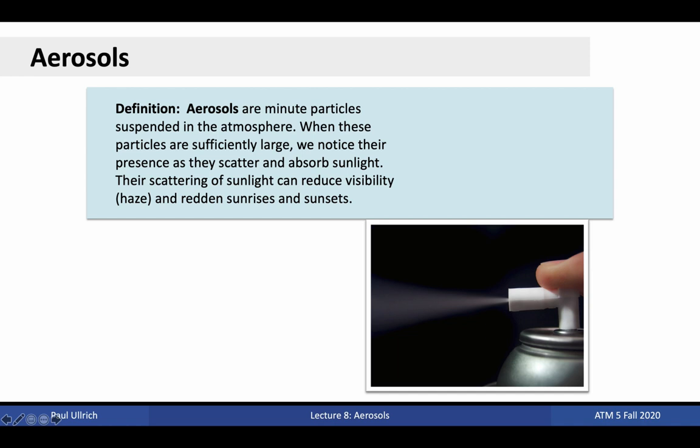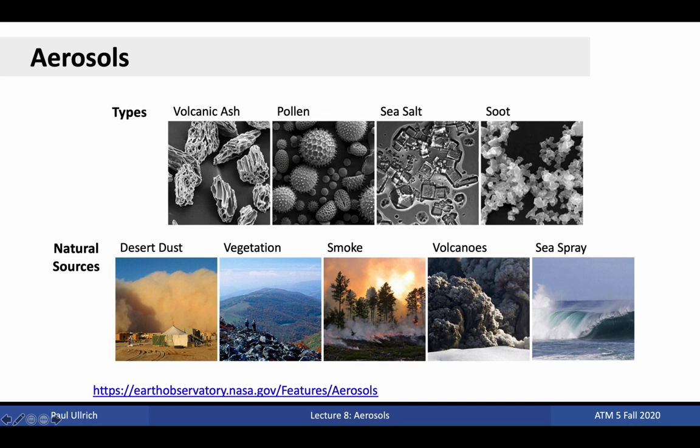There are many types of aerosols, including volcanic ash, pollen, sea salt, and soot, each shown here under a scanning electron microscope image. These particles have a variety of shapes ranging from relatively spherical to jagged and sharp. In addition to anthropogenically produced aerosols, aerosols also naturally arise from many natural sources, including desert dust, vegetation, smoke, volcanoes, and sea spray.